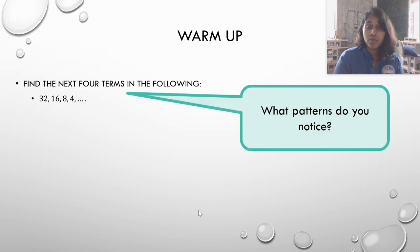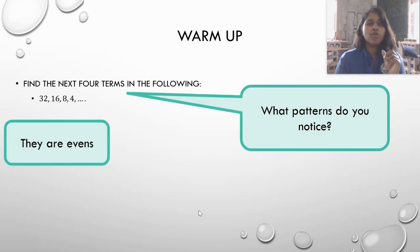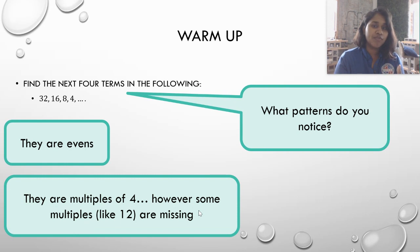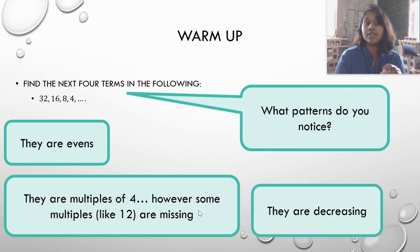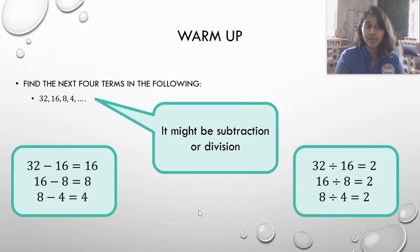So what patterns do we notice? Well, we notice that they are evens and they are multiples of something. They're multiples of four, but we are missing some. So it can't just be straight up the multiples of four. And the other thing I noticed is that it's decreasing. So something is happening to each of these numbers to knock it down a little bit, right? But they're decreasing rather quickly. So instead of simply subtraction, we should also look at division as well.